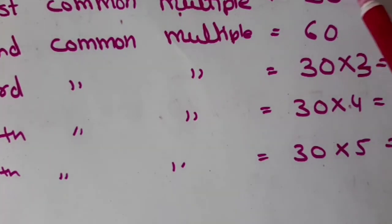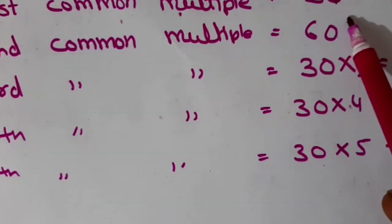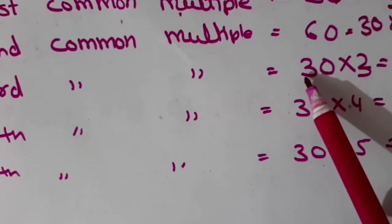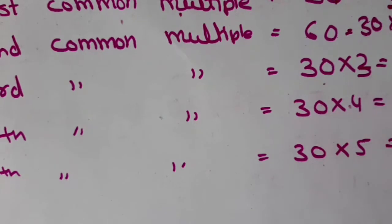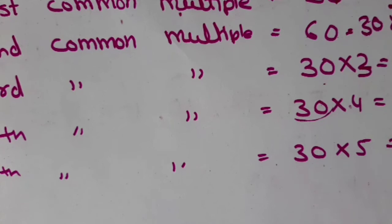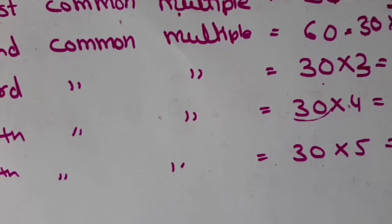You just have to multiply the LCM with the counting number. Here, multiplying LCM by 1 gives the first common multiple, which is 30. Multiplying LCM by 2 gives 60 — the second common multiple. For the third common multiple, multiply 30 by 3, which gives 90. For the fourth common multiple, multiply 30 by 4, that is 120. For the fifth common multiple, multiply 30 by 5, that is 150. So to find the next common multiple, multiply the LCM by the corresponding counting number.